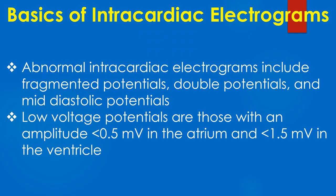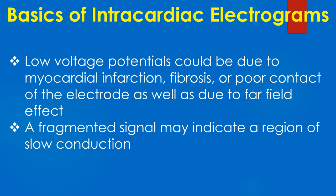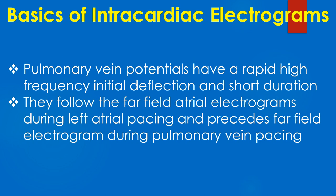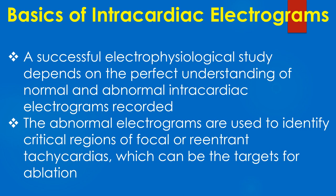Abnormal intracardiac electrograms include fragmented potentials, double potentials, and mid-diastolic potentials. Low voltage potentials are those with an amplitude less than 0.5 mV in the atrium and 1.5 mV in the ventricle. Low voltage potentials could be due to myocardial infarction, fibrosis, poor contact of the electrodes, or far field effect. A fragmented signal may indicate a region of slow conduction. Pulmonary vein potentials have a rapid high frequency initial deflection and short duration; they follow the far field atrial electrograms during left atrial pacing and precede the far field electrogram during pulmonary vein pacing. A successful electrophysiological study depends on a thorough understanding of normal and abnormal intracardiac electrograms. The abnormal electrograms are used to identify critical regions of focal or reentrant tachycardias, which can be the targets for ablation.